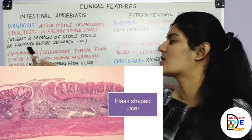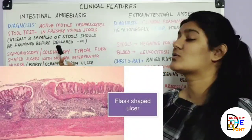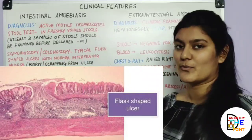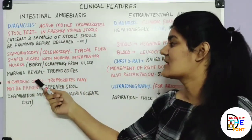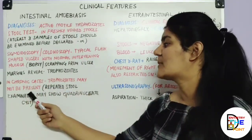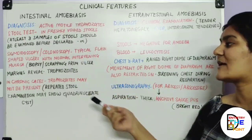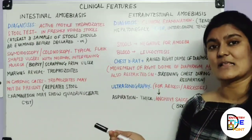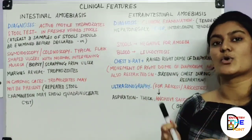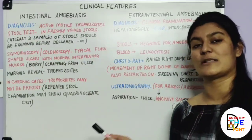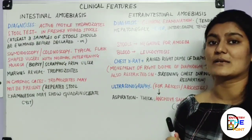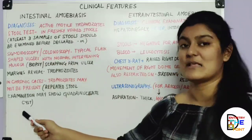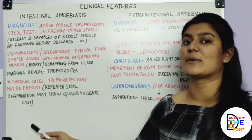On sigmoidoscopy, typical flask-shaped ulcers will be visible, and biopsy or scraping of these ulcers will reveal trophozoites. In chronic cases, trophozoites may not be present, because excystation and encystation occur simultaneously — conversion of trophozoites to cysts and back. Therefore, chronic cases may also show quadrinucleate cysts in the stool.